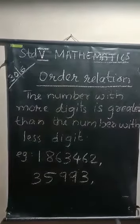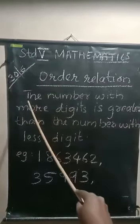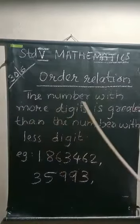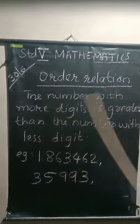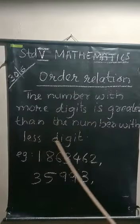The first rule for comparing numbers is the number with more digits is greater than the number with less digits.